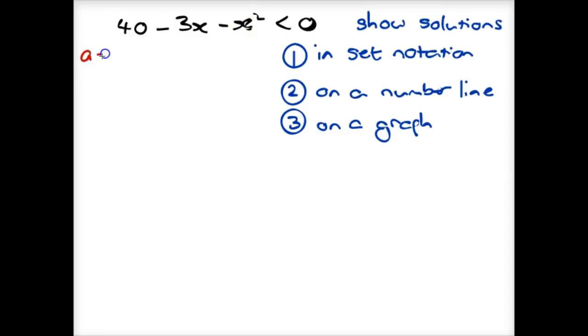And in this case, a is negative 1 because it's minus x². b is negative 3, and c is 40. However, it does factorize.